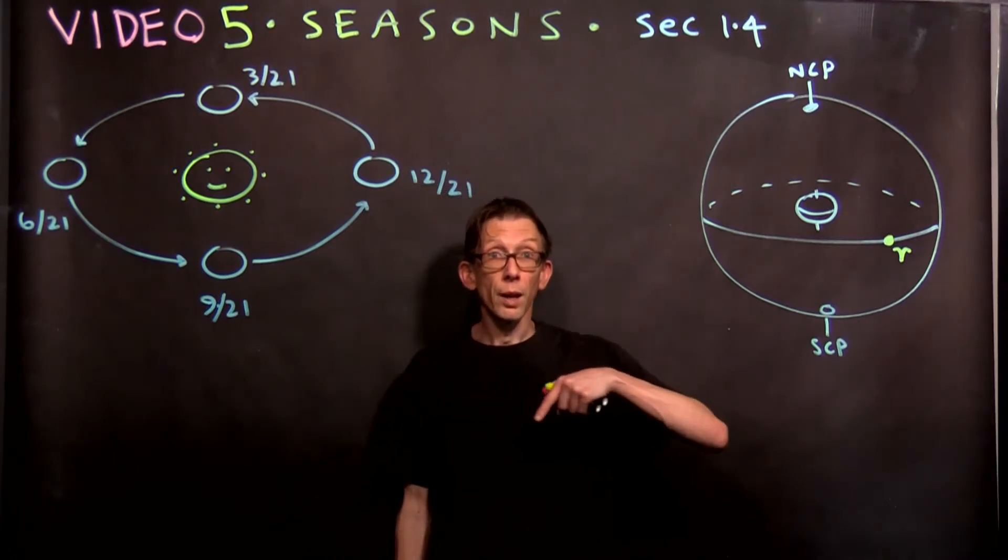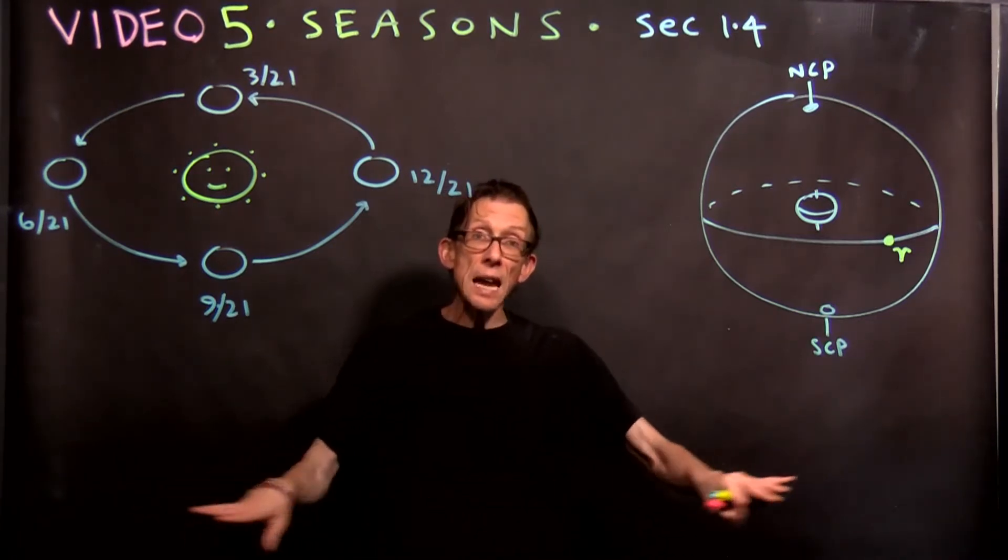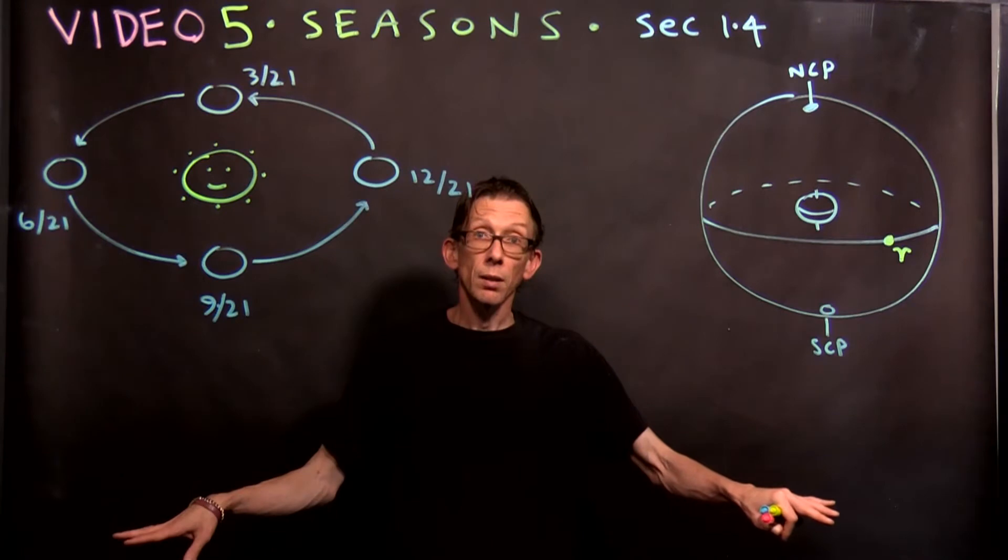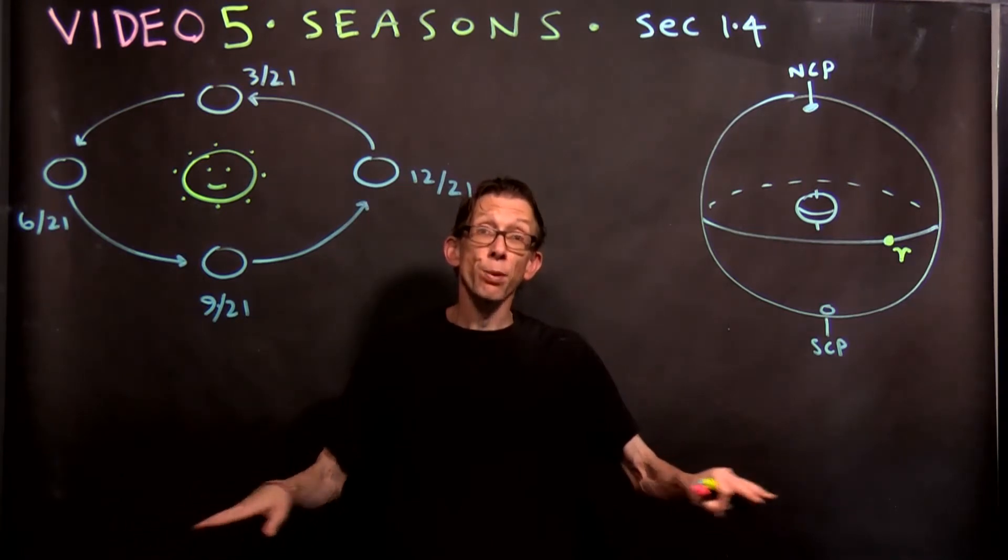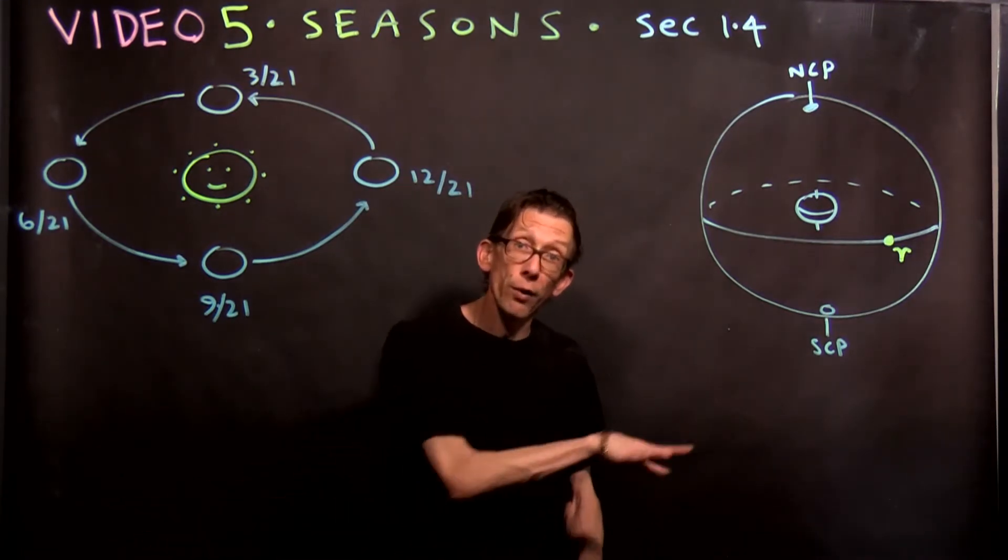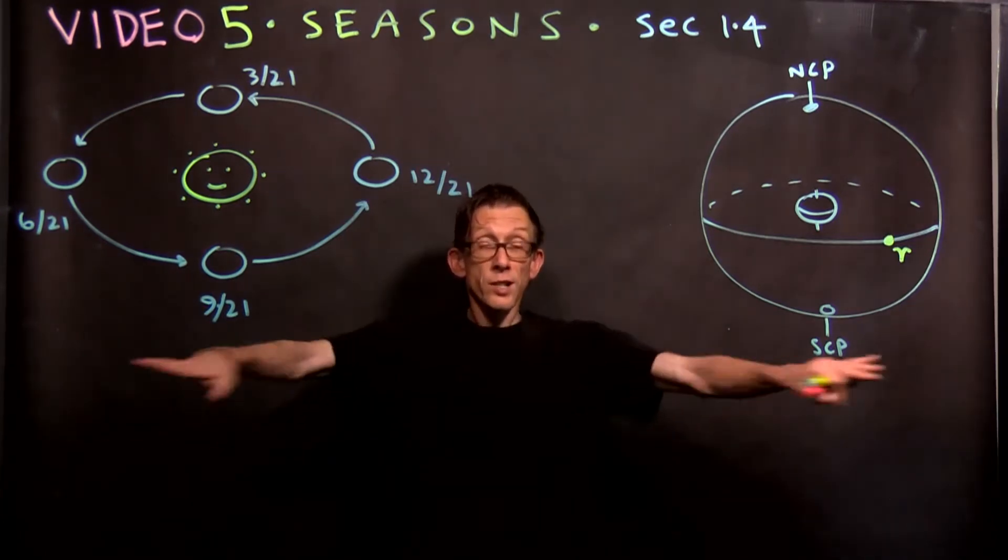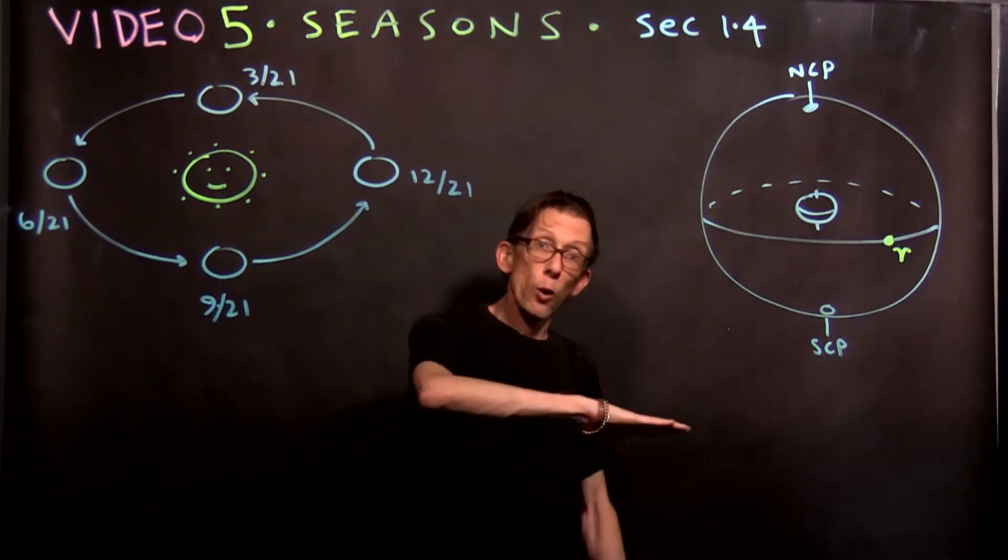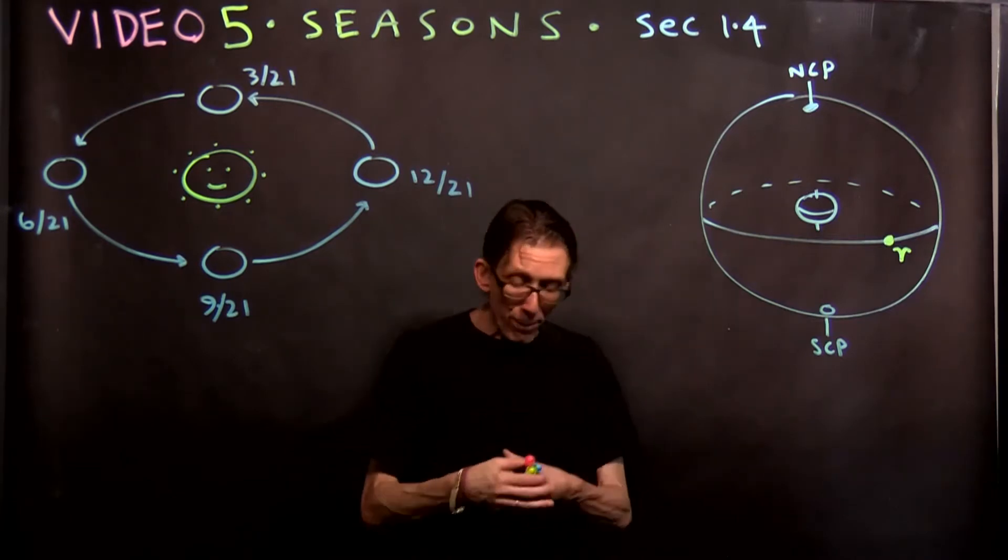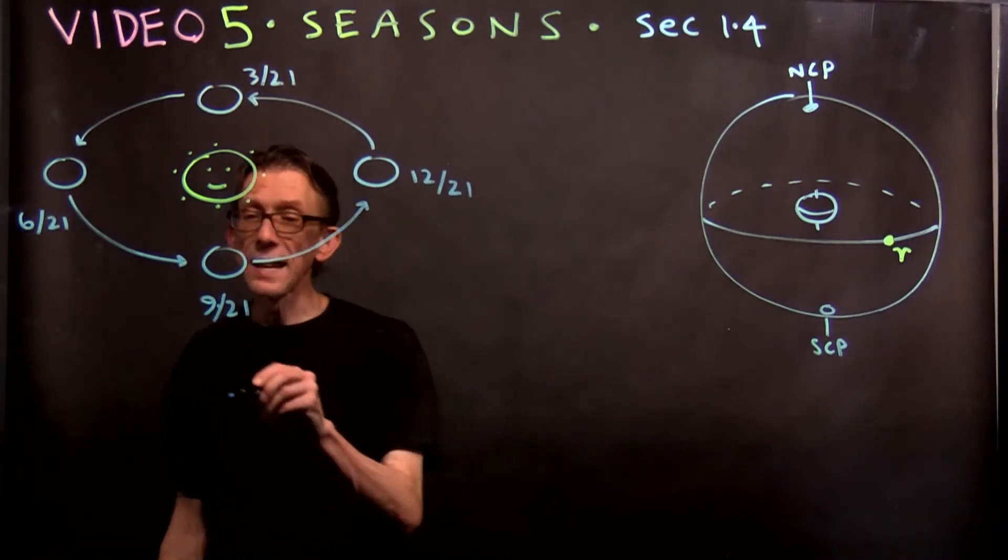Well, you can imagine this orbit happening, say, on a tabletop. You have the toy sun on a big table, and then you've got the earth rolling around it. The plane of the table sort of defines the plane of the orbit of the earth. The earth orbits in a plane, in a flat, two-dimensional surface. It orbits around in a plane. That plane is known as the ecliptic.